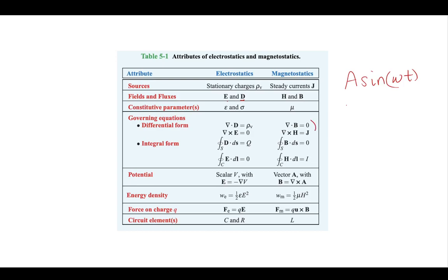The equations we're dealing with were introduced in differential form, but just like in electrostatics, we can transform them into integral form and we'll work with that occasionally. In this class, we're not going to be dealing with the vector potential. It's important to note that we have an energy density for magnetostatics governed by the field intensity, and the force on a charge in a magnetic field is related to speed U crossed with the field. In circuits, inductors are closely related to magnetostatics.